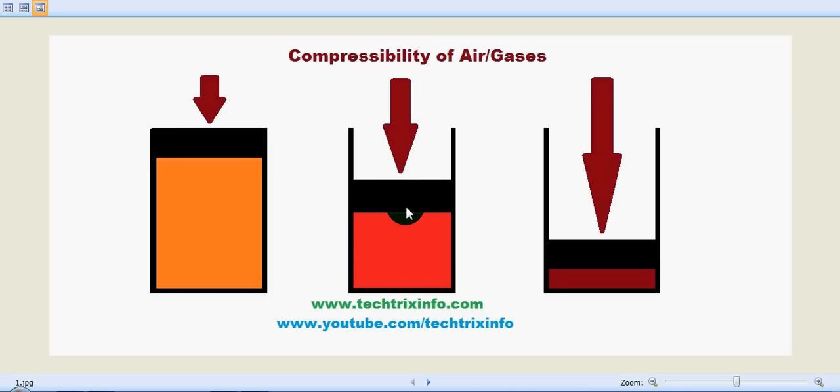When further load is applied to the piston, it gets compressed again. This is the maximum compressibility of this particular air filled inside the cylinder. This proves the compressibility of air.